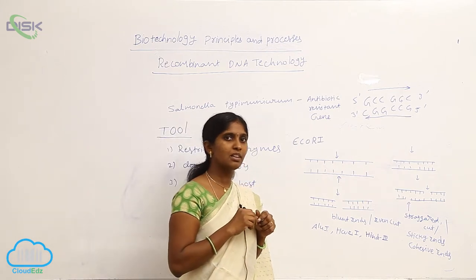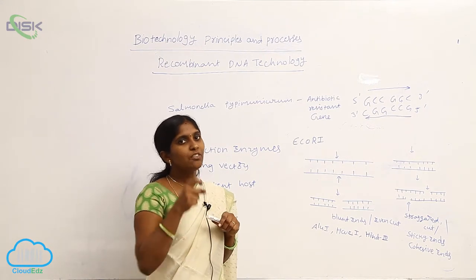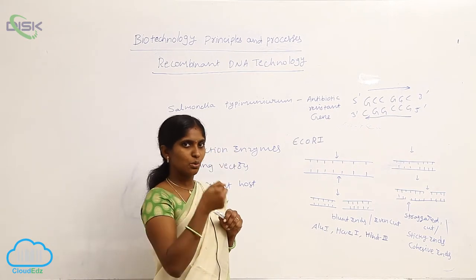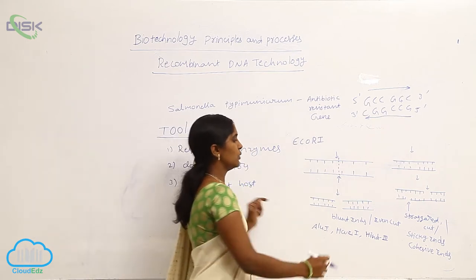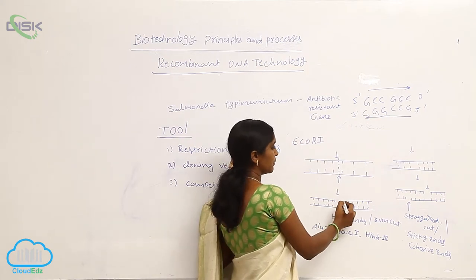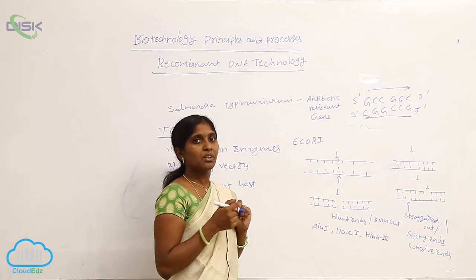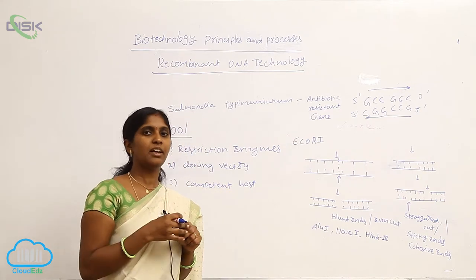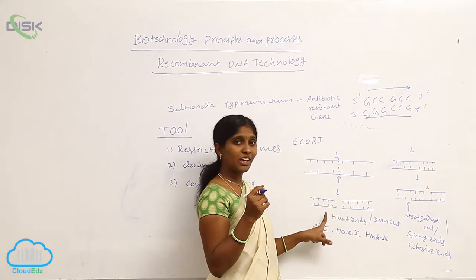When palindromic sequences are present, some restriction enzymes make an even cut — from the upper strand straight down to the lower strand, cutting at the same position. This results in two equivalent fragments with blunt ends. Blunt ends cannot rejoin directly.